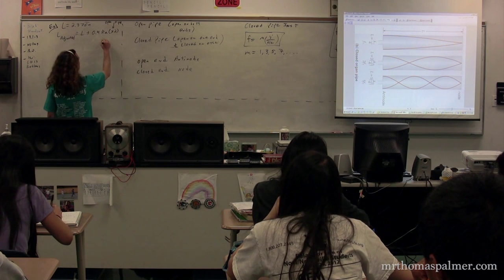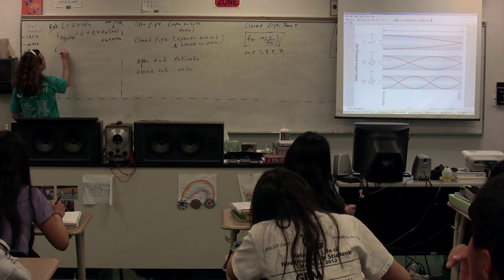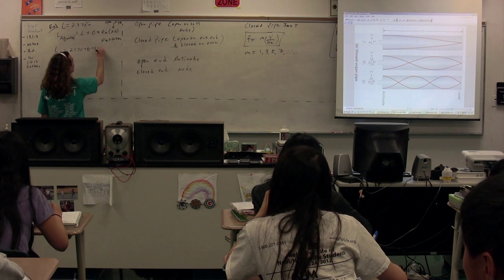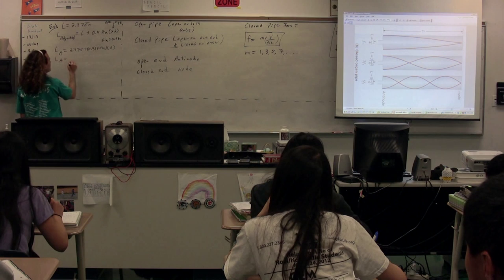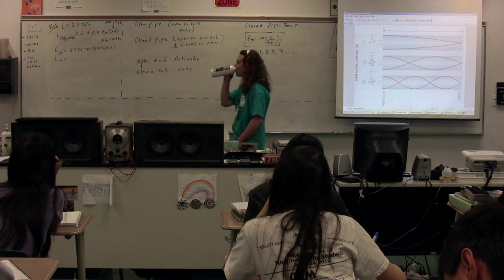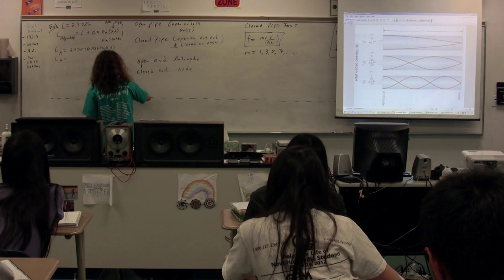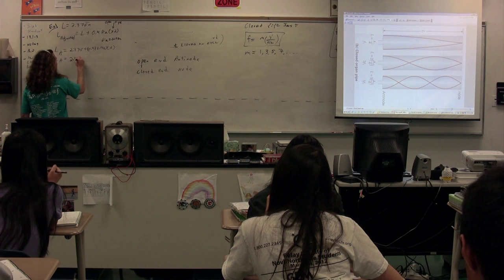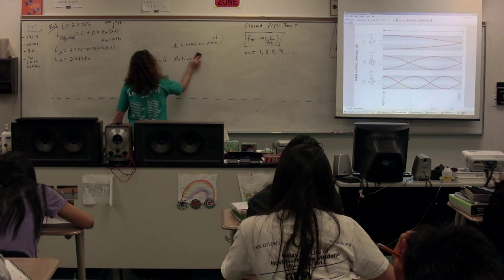The diameter of this is 0.136 meters. That means that the length adjusted is equal to 2.375 plus 0.4 times 0.136 times 2. The adjusted length of this pipe is 2.4838 meters.